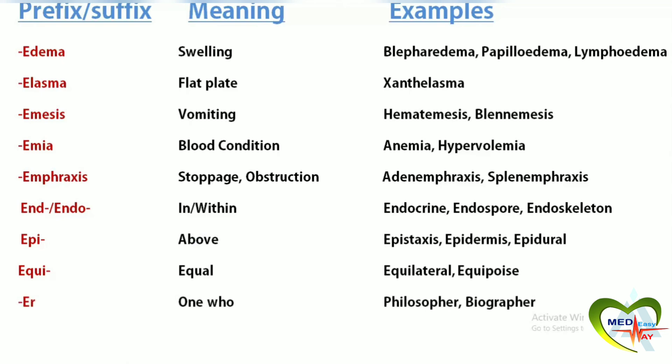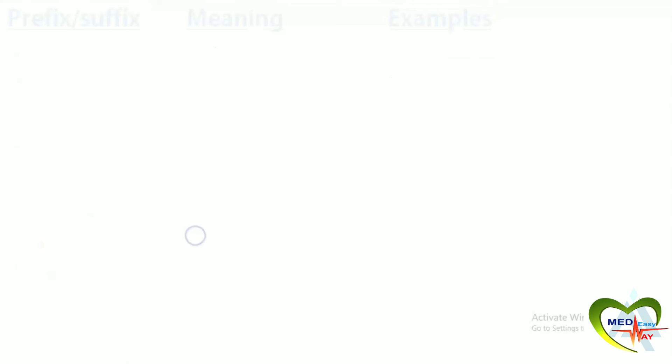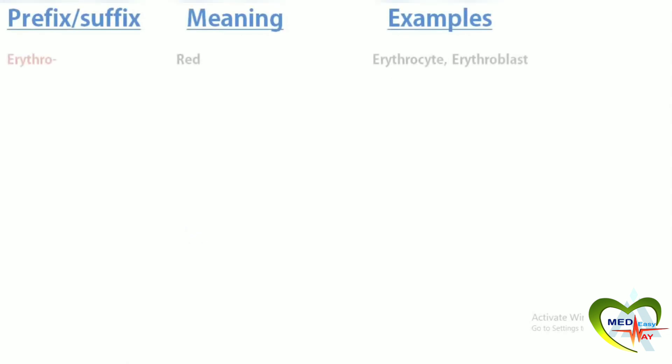Er means one who. A philosopher is one who engages in philosophy. A biographer is one who engages in biography. Erythro means red. Erythrocyte is a red blood cell. Erythroblast is an immature erythrocyte, or immature red blood cell.